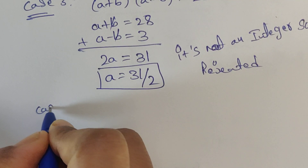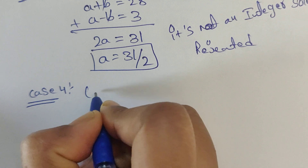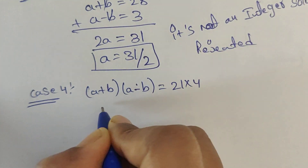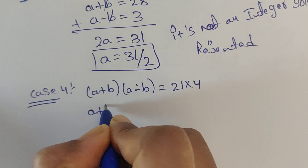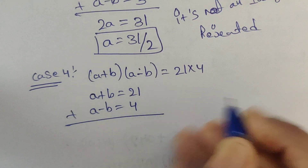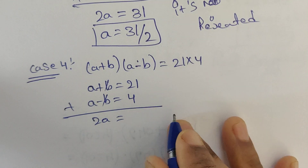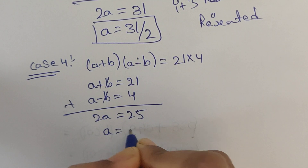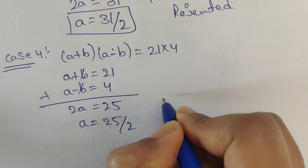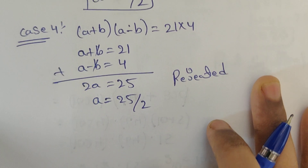Case 4: a plus b times a minus b equals 21 times 4. Splitting as a plus b equals 21 and a minus b equals 4, then adding the two equations, b cancels, giving 2a equals 21 plus 4 which equals 25. So a equals 25 divided by 2, which is a fraction — not a natural number, so this case is also rejected.